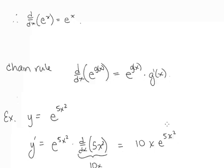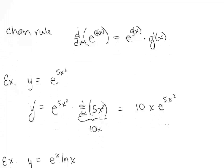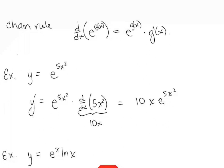For example, for y equals e to the 5x squared, the derivative y prime is e to the 5x squared multiplied by the derivative of 5x squared, which is 10x. So y prime equals 10x e to the 5x squared.